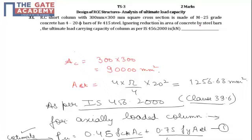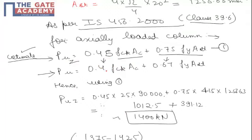So it is 0.45 into FCK which is 25 into area of concrete 90,000 plus 0.75 FY which is 415, area of steel is 4 into pi by 4 into 20 square because 4 bars of each diameter 20 mm is used, making area of steel as 1256.63. So the answer comes out to approximately 1400 kN.